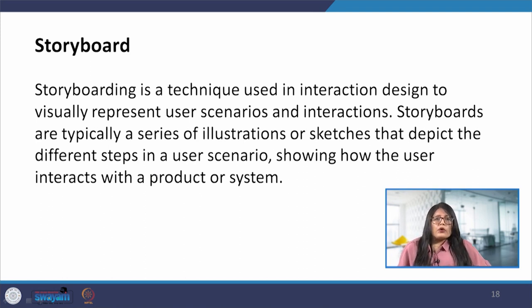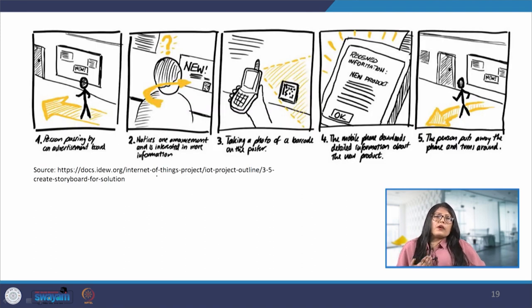Now next technique is storyboard. Storyboarding is a technique used in interaction design to visually represent user scenarios and interactions. Storyboards are typically a series of illustrations or sketches that depict the different steps in a user scenario, showing how the user interacts with a product or system. Stories are a natural way for people to communicate and explain their actions, making them relatable to the stakeholders. These stories typically focus on user's goals and what they aim to achieve, shifting the focus from technology to the human activity.